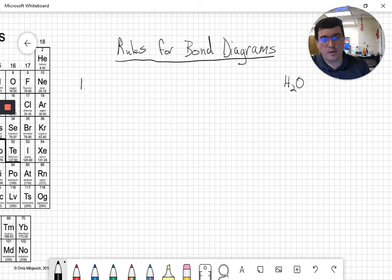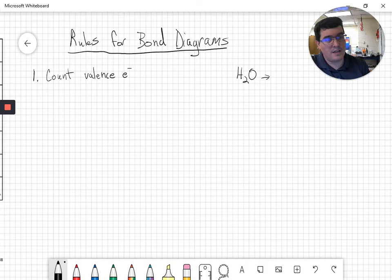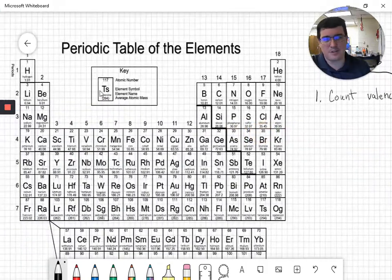So rules for drawing bond diagrams. Number one, we have to count or sum or do some basic arithmetic valence electrons. So what we're going to do with this problem is identify how many valence electrons are in dihydrogen monoxide. Water, better name for it is water.